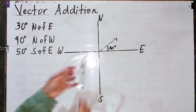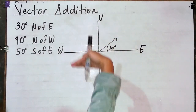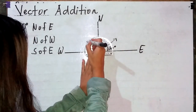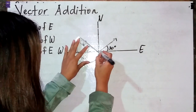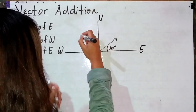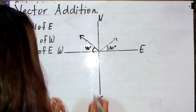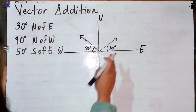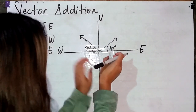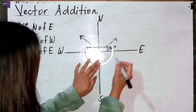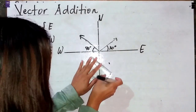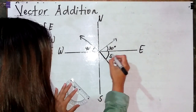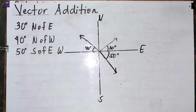Next, 40 degrees north of west — west papuntang north, so pataas. We align the protractor on the x-axis again and measure 40 degrees. This is our 40 degrees north of west. Lastly, 50 degrees south of east — east papuntang south. We align the protractor on the x-axis, and measure 50 degrees going downward. This is 50 degrees south of east.